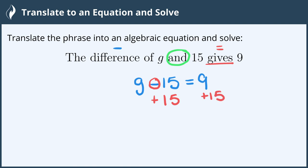Subtract 15 add 15 makes 0. 0 plus g is just g. Now on the right hand side I have 15 plus 9 which makes 24.